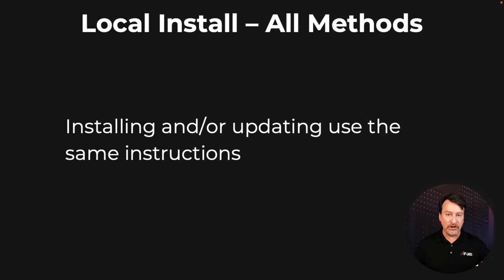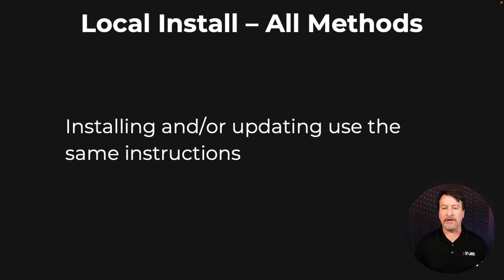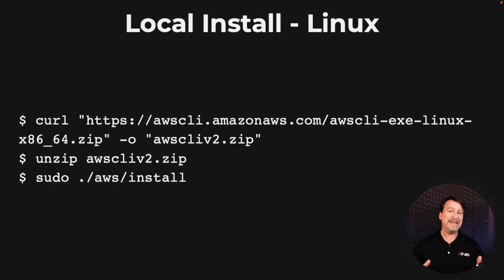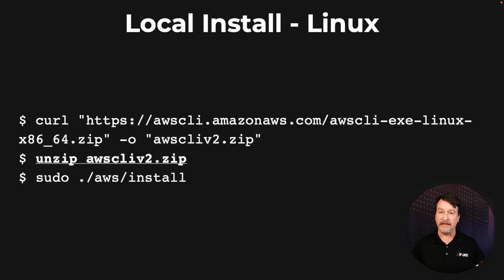The install and the update process are exactly the same. There's no update path. So if you need to update an AWS CLI running local, it's going to be like you're installing it for the first time. The basic gist, whether it's Linux, Mac, or Windows, is you download — which on Linux is simply a curl command. You're downloading a zip, so you do need to unzip it on Linux, and then finally do the install.